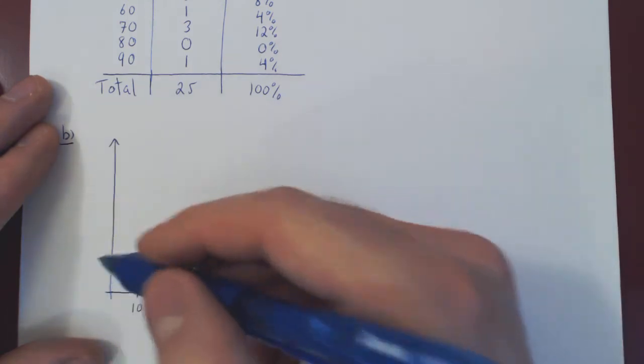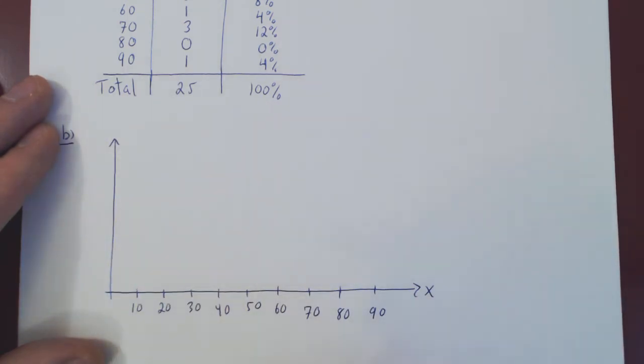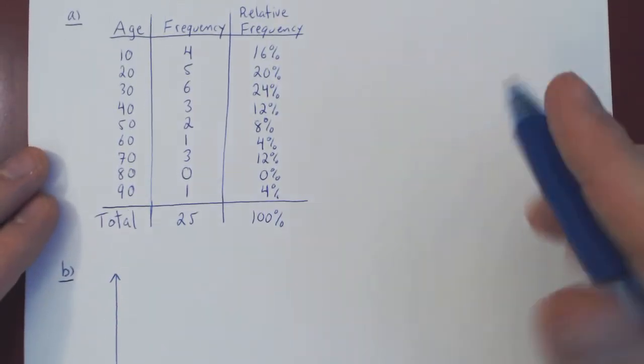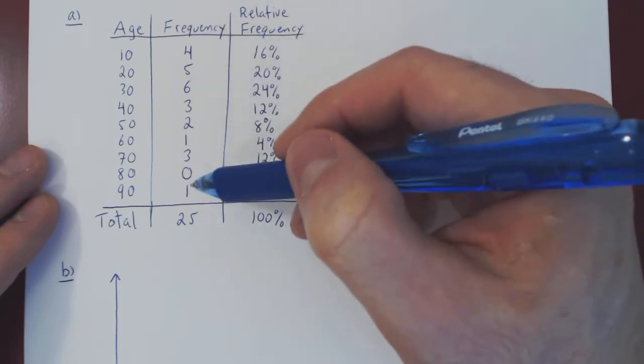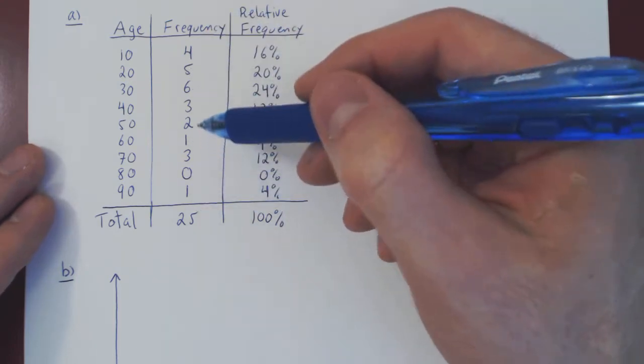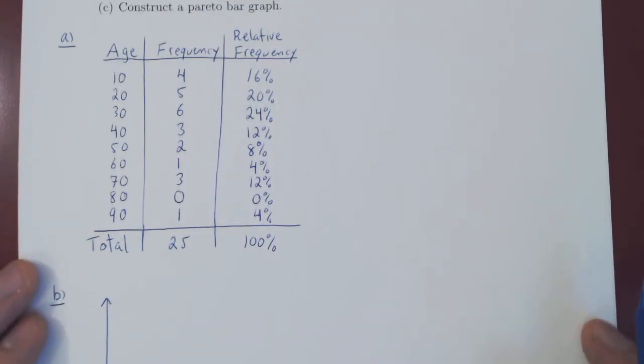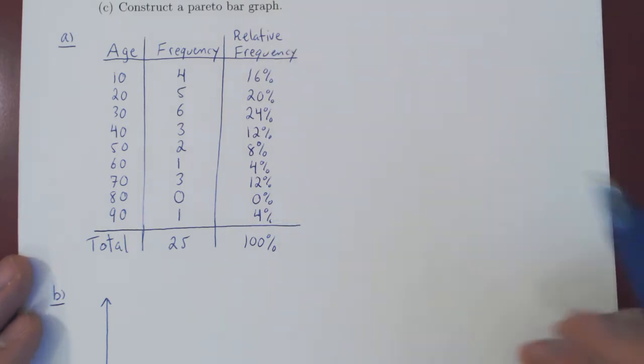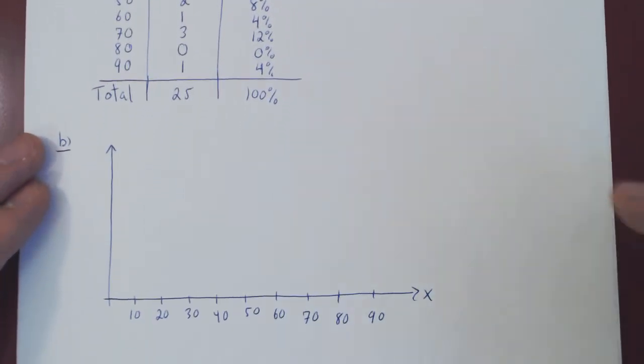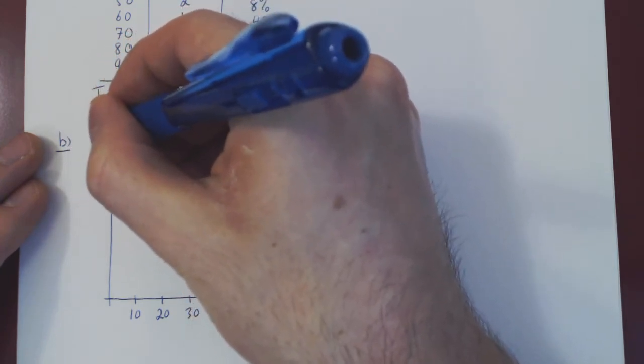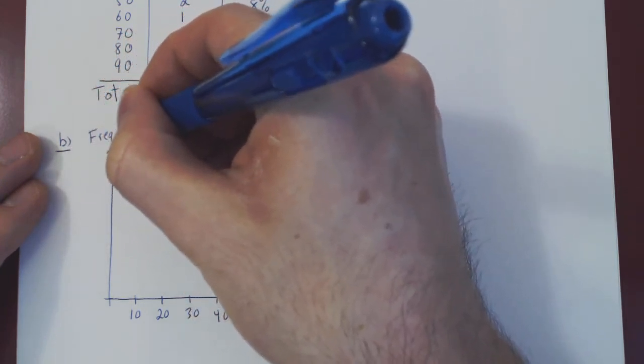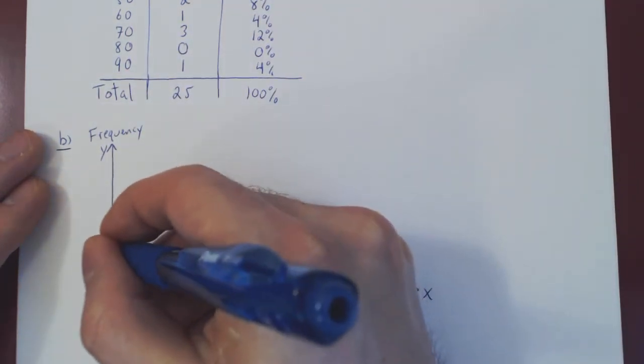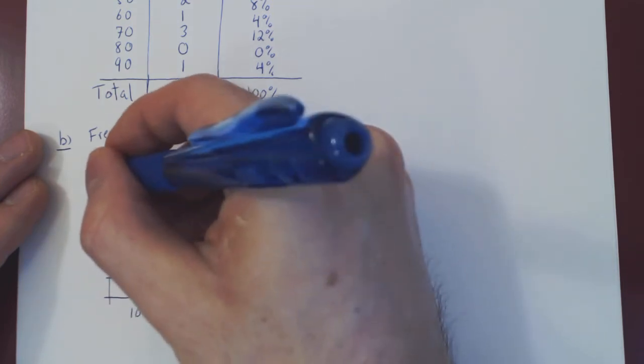And along the y-axis, and here's up to you. You either include the frequency or the relative frequency. It doesn't matter which one. So here, we have rather nice frequencies, right? It goes from zero up to six. So here we'll go with the frequency. But if it makes more sense to have the relative frequencies along the y-axis, then use the relative frequencies. The bar graph will look exactly the same. So here we'll write frequency. So zero, one, two, three, four, five, six.